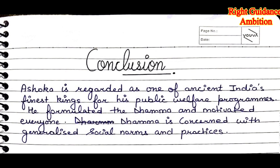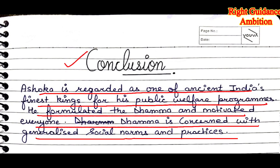For conclusion, it is a must to write four to five important lines. You can write that Ashoka was a great king who released welfare and public programs for people. Because of Dhamma, people started to know what is right and what is wrong in society and began to respect those values. In conclusion, Ashoka's policy helped greatly to develop society and help it prosper.